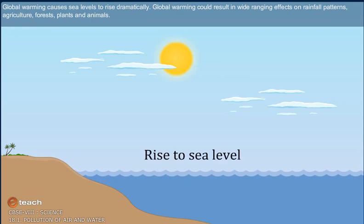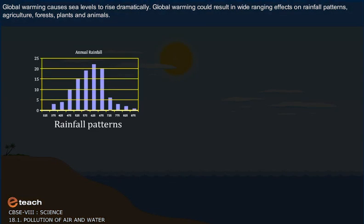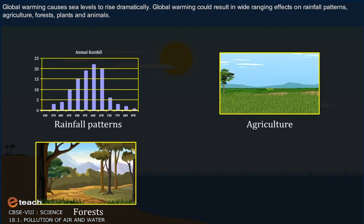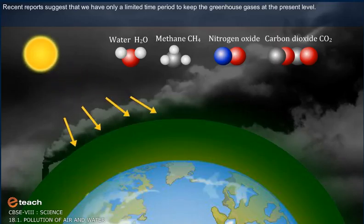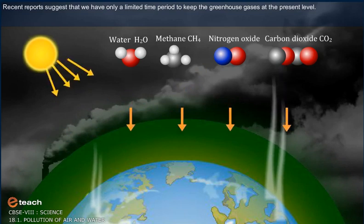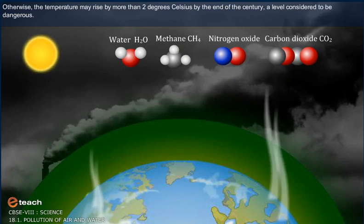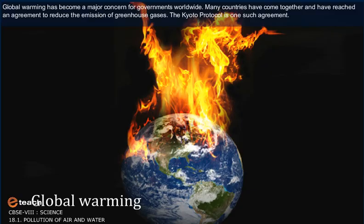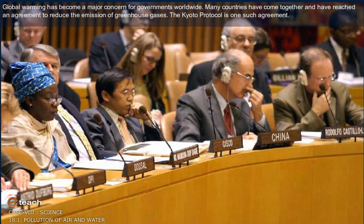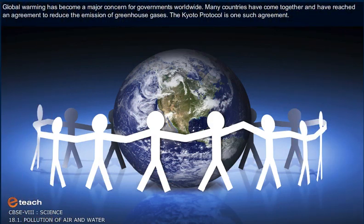Global warming causes sea levels to rise dramatically. Global warming could result in wide-ranging effects on rainfall patterns, agriculture, forests, plants and animals. Recent reports suggest that we have only a limited time to keep the greenhouse gases at the present level; otherwise, the temperature may rise by more than 2 degrees Celsius by the end of the century, a level considered to be dangerous. Many countries have come together and reached an agreement to reduce the emission of greenhouse gases. The Kyoto Protocol is one such agreement.